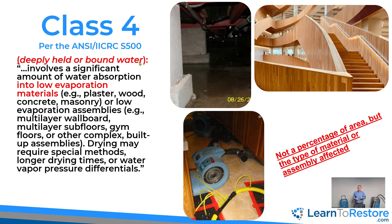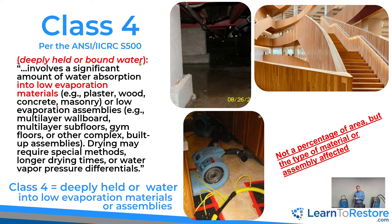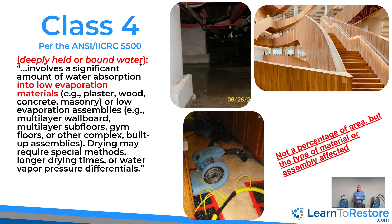Class four changes gears a little bit. Class four is not about the percentage of what's wet, but the type of materials that are wet. By definition, this is deeply held or bound water — sometimes referred to as trapped water. It involves a significant amount of water absorption into low-evaporation materials such as plaster, wood, concrete, and masonry. These materials take a long time for water to get in, it binds in there, and therefore it's hard to get back out. It also applies to low-evaporation assemblies — such as multiple layers of subfloor, gym floors, multiple layers of wallboard, or other complex built-up assemblies. Drying times are more difficult and require good vapor pressure differential. So if I have a hardwood floor and even just a little bit of it is wet in the corner, that's going to be a class four loss. It's not about percentage or how much area is wet — it's the type of materials.